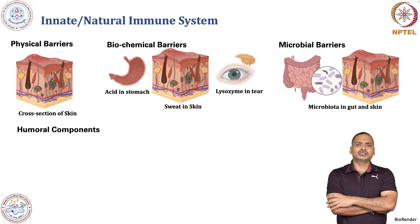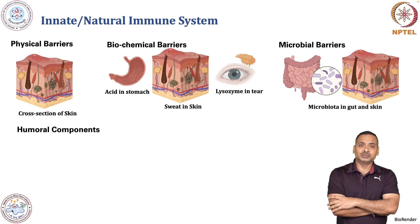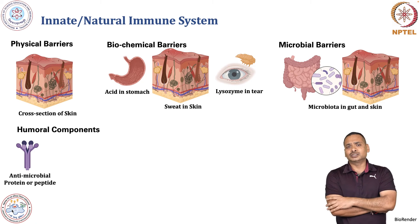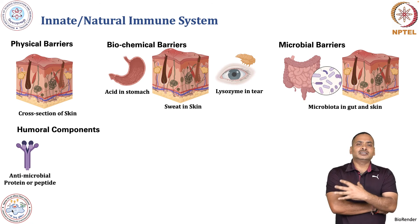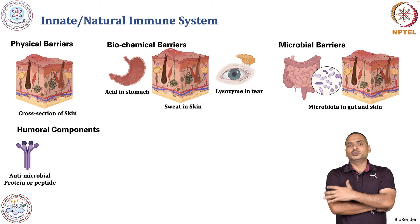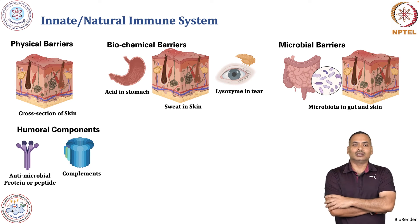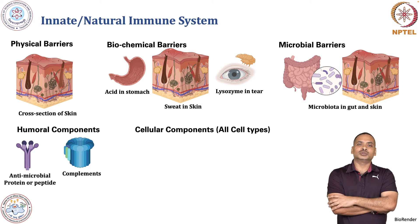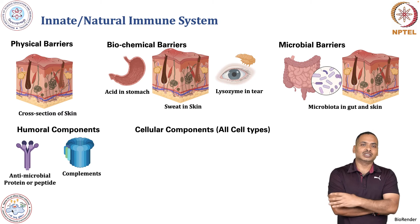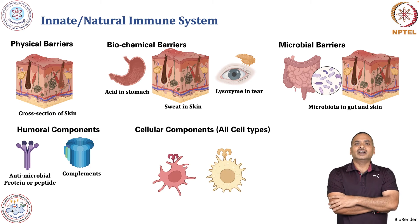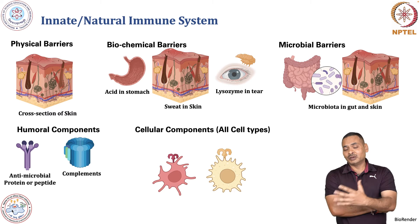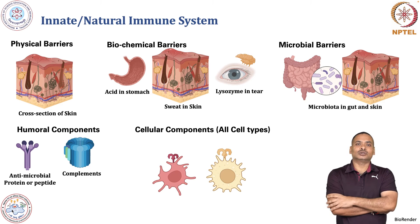The innate immune system also consists of a humoral component, which consists of antimicrobial proteins or peptides, and there is a family of proteins which we call the complement. We will discuss in great detail about the complement, and then we will move to the cellular component of the innate immune system, which basically consists of all cells, and these cells express a pathogen sensor. There are families of pathogen sensors and we will discuss all those things.